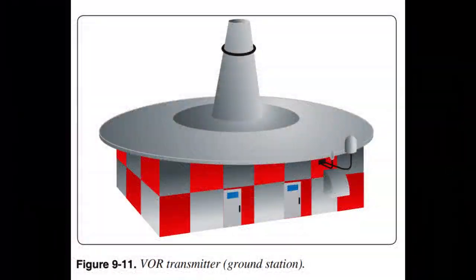VOR Components. The ground equipment consists of a VOR ground station — a small, low building topped with a flat white disk upon which are located the VOR antennas and a fiberglass cone-shaped tower. The station includes an automatic monitoring system that automatically turns off defective equipment and turns on the standby transmitter. Generally, the accuracy of the signal from the ground station is within one degree.